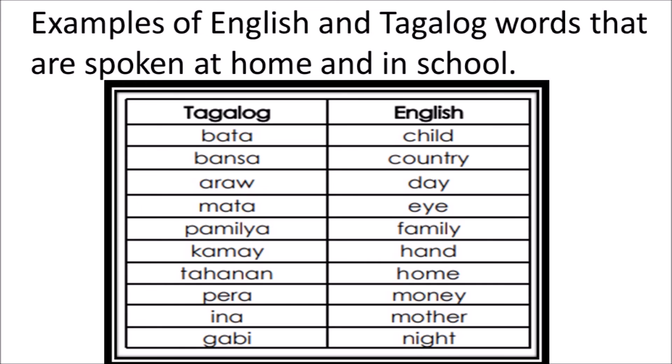Tagalog: Tahanan. In English: Home. Pera — Money. Ina — Mother. Gabi — Night. As you could notice, the Tagalog words are different from the spelling in English words, but they have the same meaning.